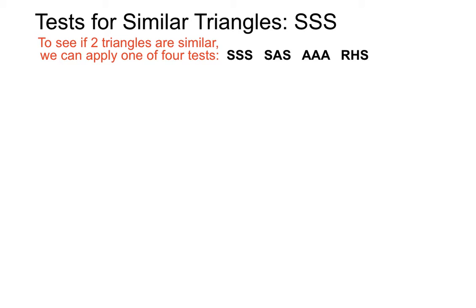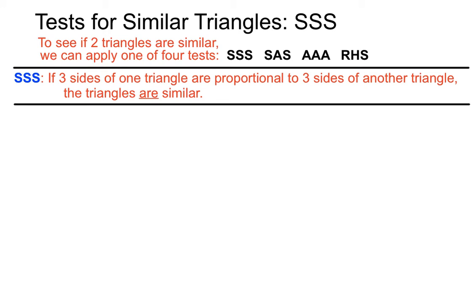AAA and RHS. This test for similar triangles states that if three sides of one triangle are proportional to three sides of another triangle, the triangles are similar.